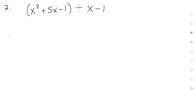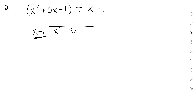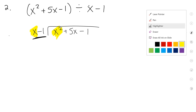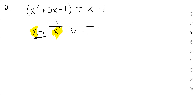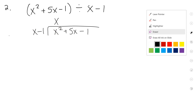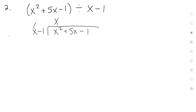Let's set up the next example. You have x squared plus 5x minus 1 being divided by x minus 1. Notice this one has two items — we're moving up a level. So think with me: x times what will give you x squared? x. Good. So everyone please write an x at the top.